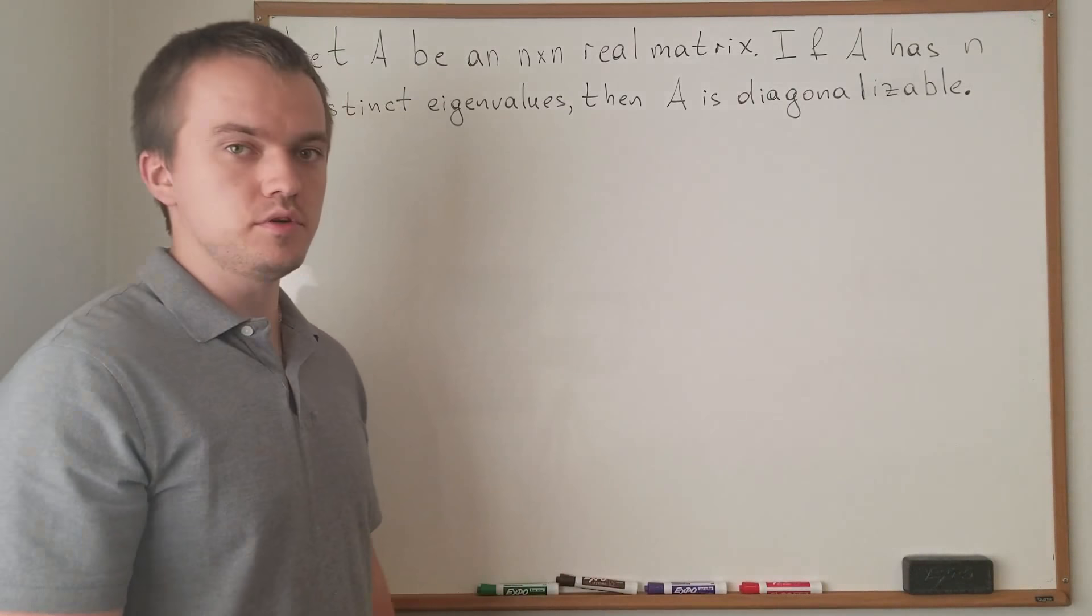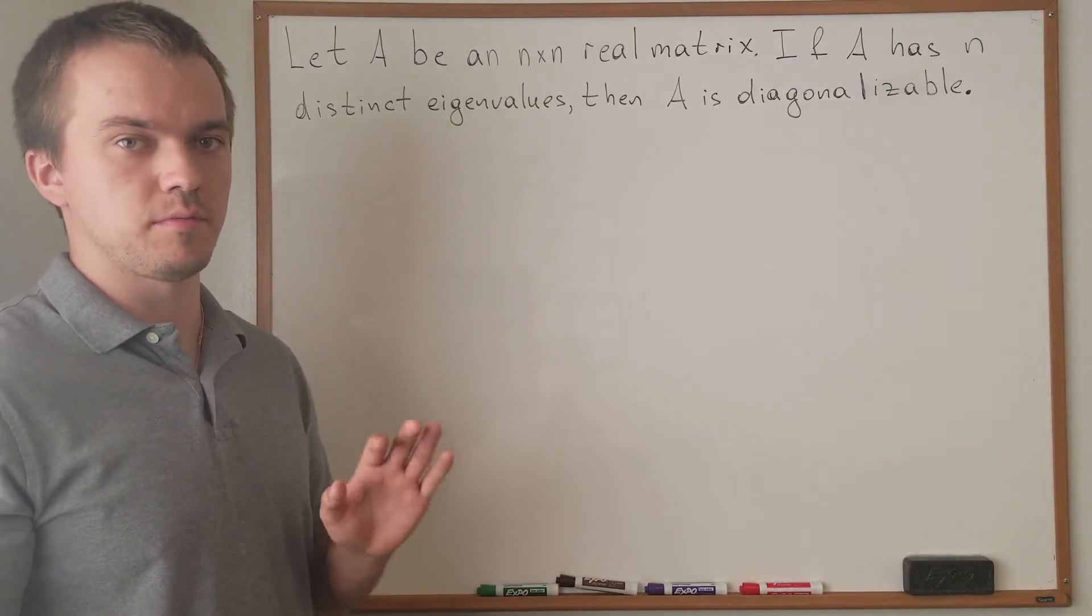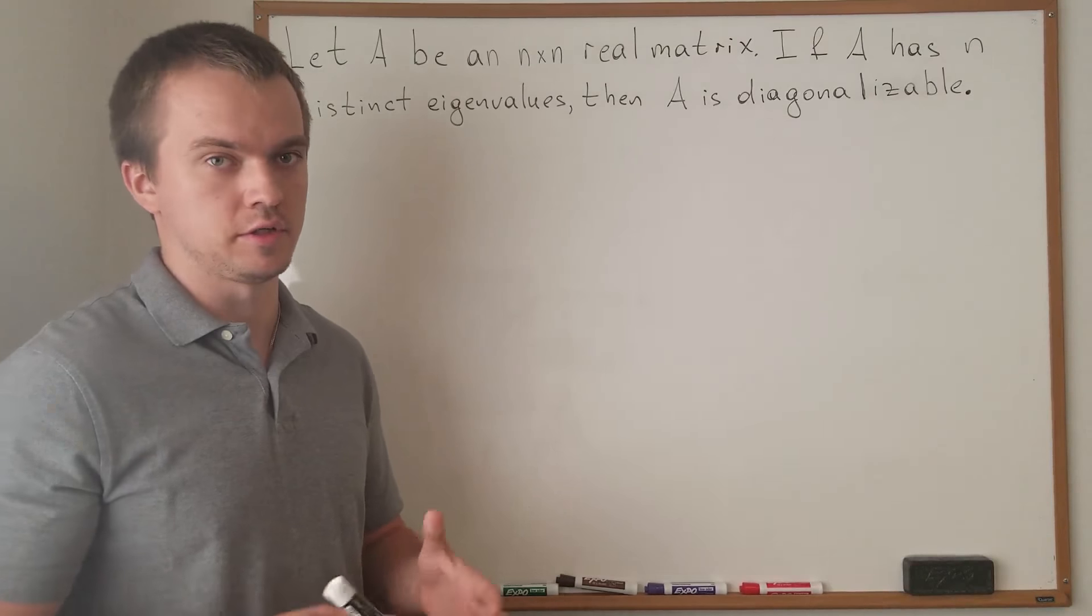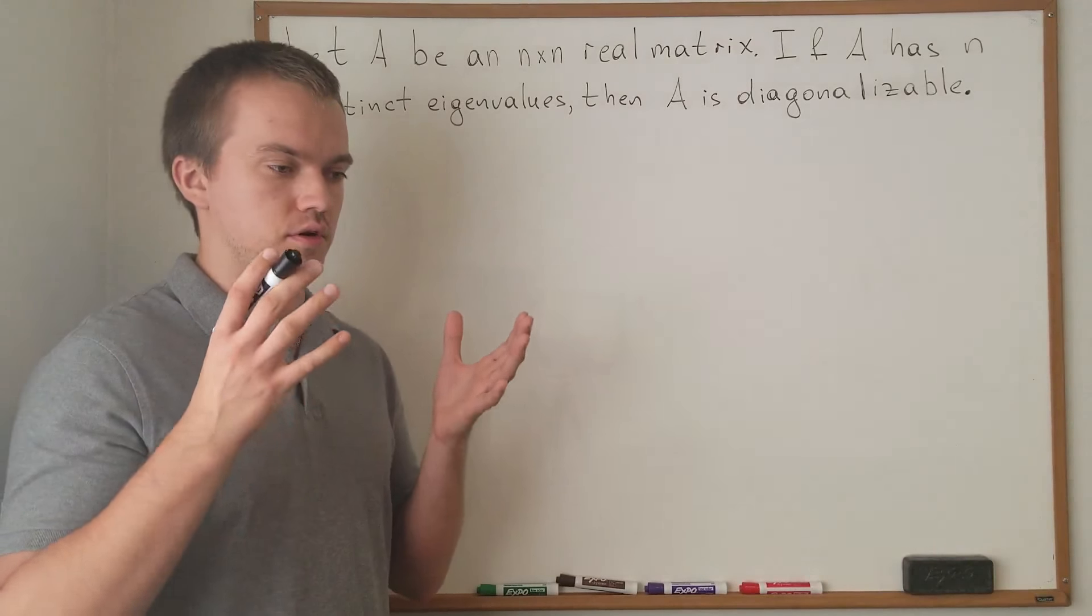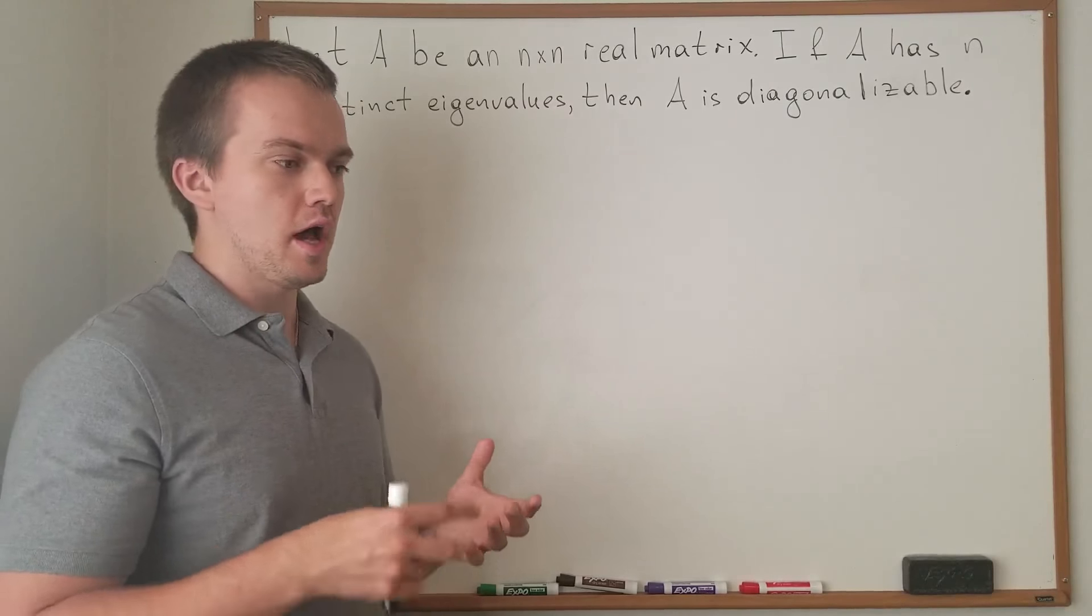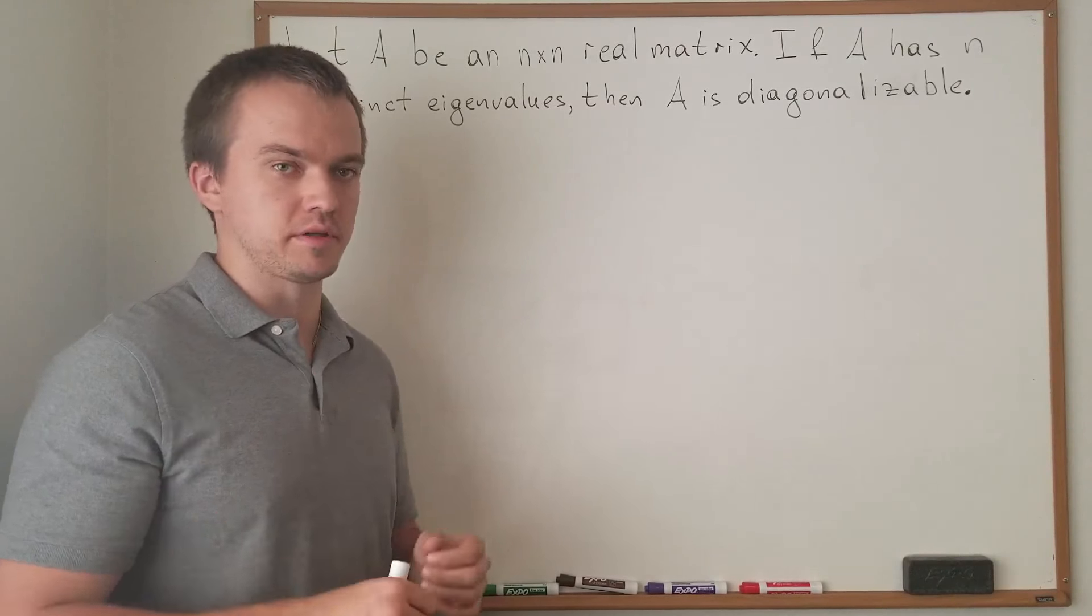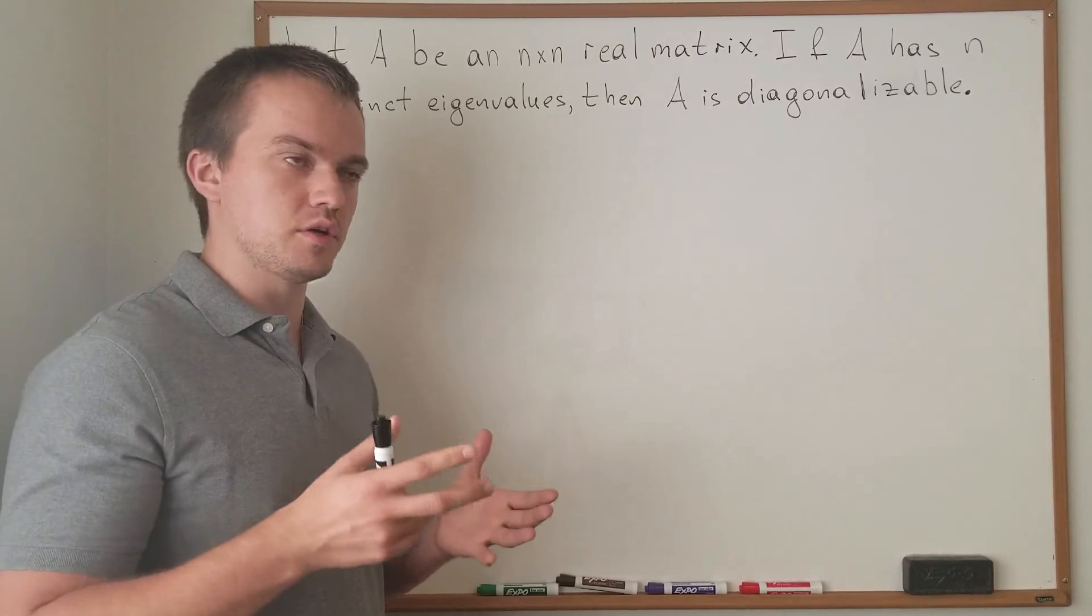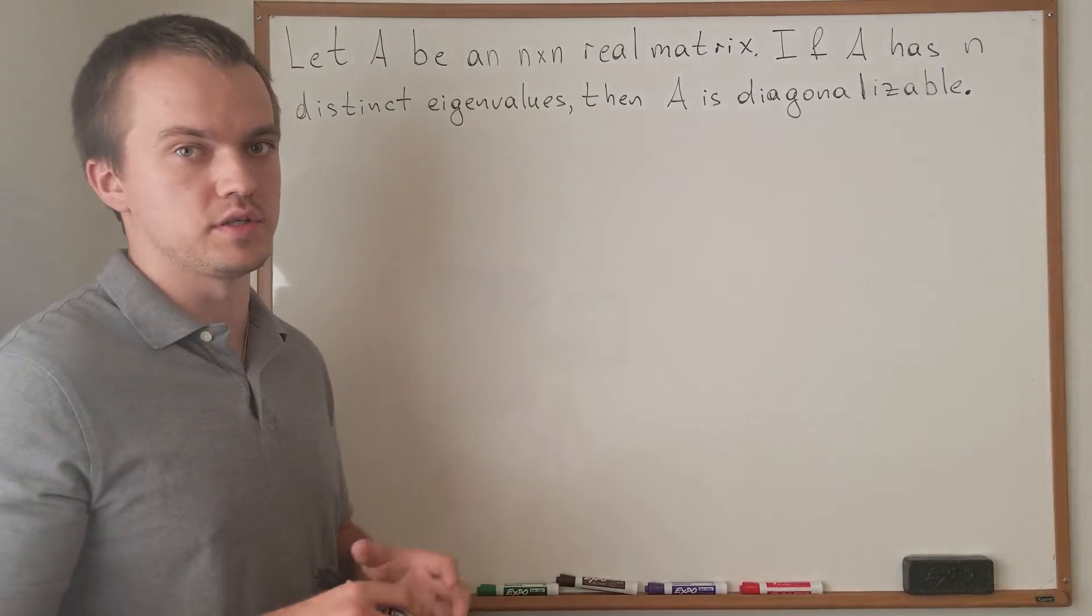Hello guys, in this video I want to continue to discuss my previous video when we talked about having a bunch of vectors, a finite number of vectors with distinct eigenvalues, and I showed that those vectors are linearly independent. So let me continue that set of videos and actually show why we need this result.